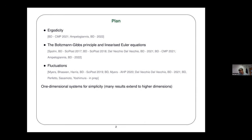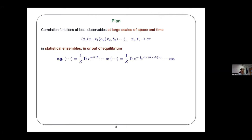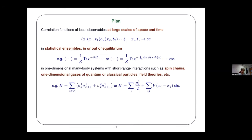I will discuss one-dimensional systems for simplicity, though many of the results are valid in higher dimensions. I certainly welcome questions throughout the talk. The objects of study are correlation functions in many-body quantum systems — many results can also be applied to classical systems, but I'll keep to quantum systems — in various states, for instance thermal states or states not at equilibrium, with varying temperature in space or things like that. The kinds of models I have in mind include spin chains, one-dimensional gases, or field theories. Two examples are the XX spin chain and a gas of particles in interaction.